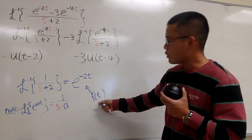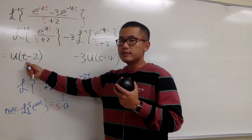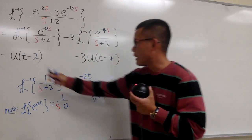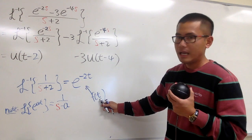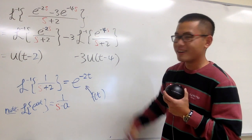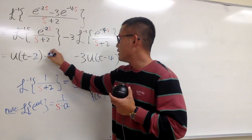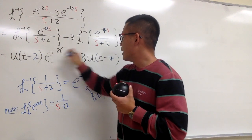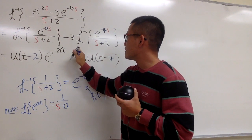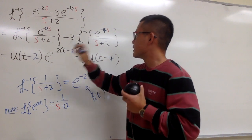Then the input is t minus 2. I just have to plug in t minus 2 into the t. That means I will have e to the negative 2, and this t becomes t minus 2.